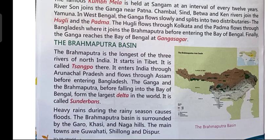The Brahmaputra is the longest of the three rivers of North India. It starts in Tibet, where it is called Sangpho — note that the T is silent, so it is pronounced Sangpho. Brahmaputra enters India through Arunachal Pradesh and then flows through Assam before entering Bangladesh.